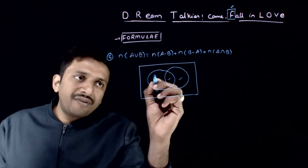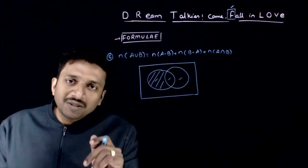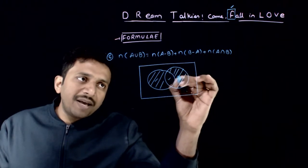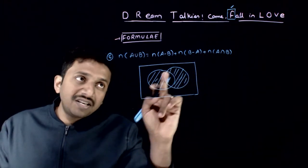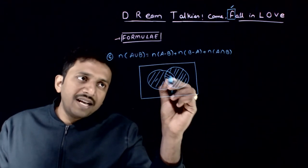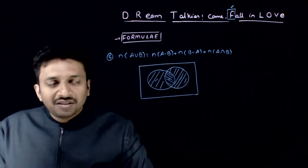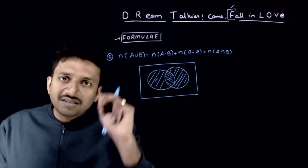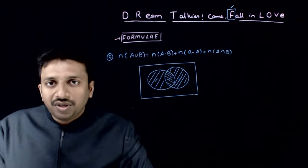The first region can be thought of as N of A minus B, and the second region is N of B minus A. Adding the elements in this region, this region, and N of A intersection B — the middle region — gives you the total number of elements in A union B.